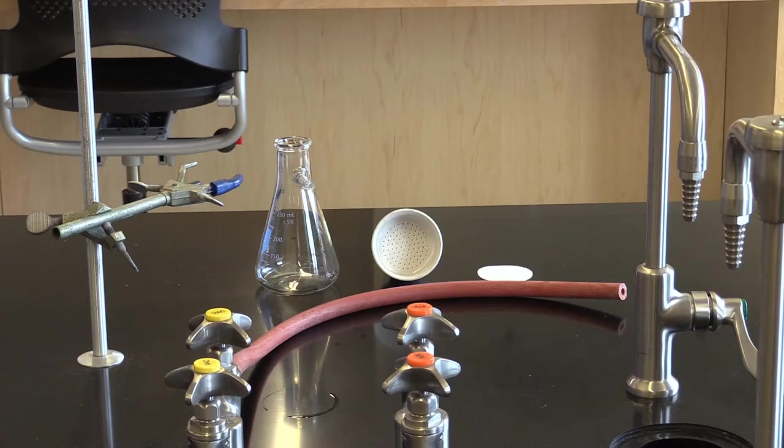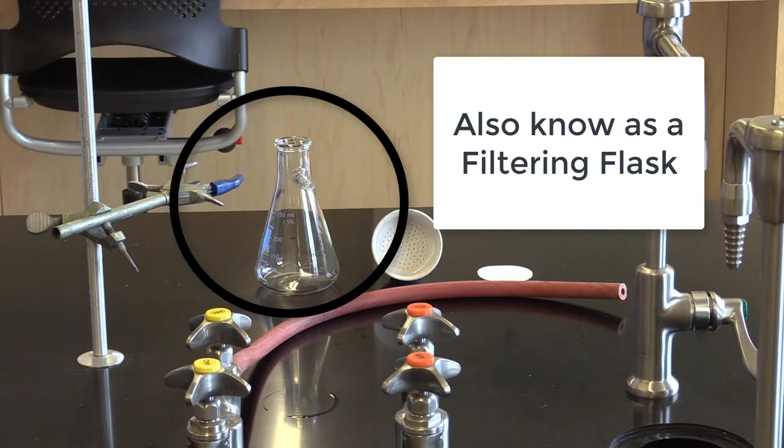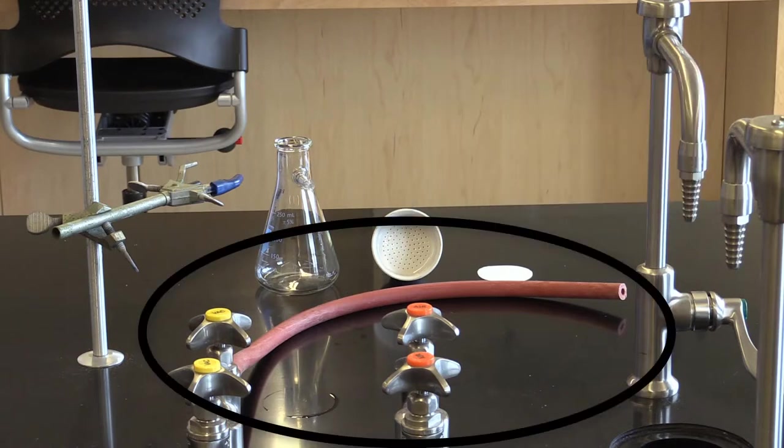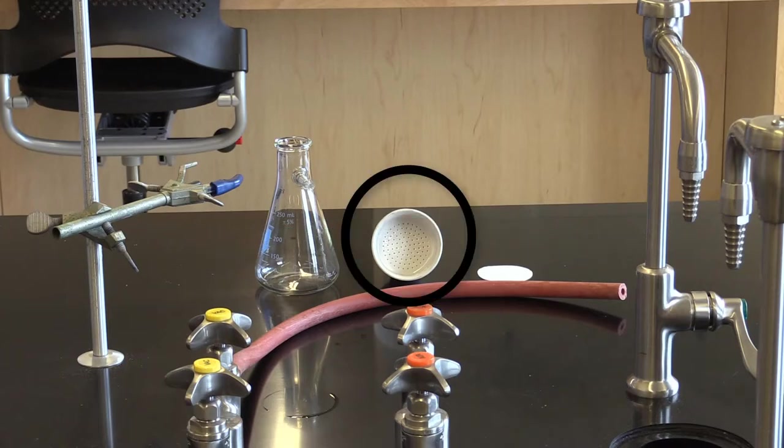As you can see here, we have the clamp needed to hold the vacuum Erlenmeyer flask in place along with proper vacuum tubing, the Buchner funnel, and filter paper.